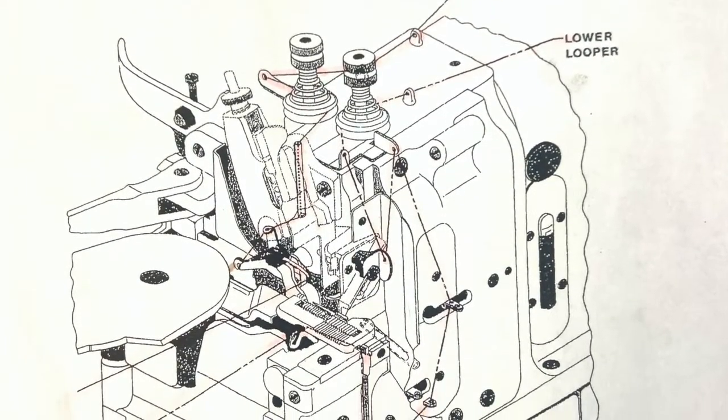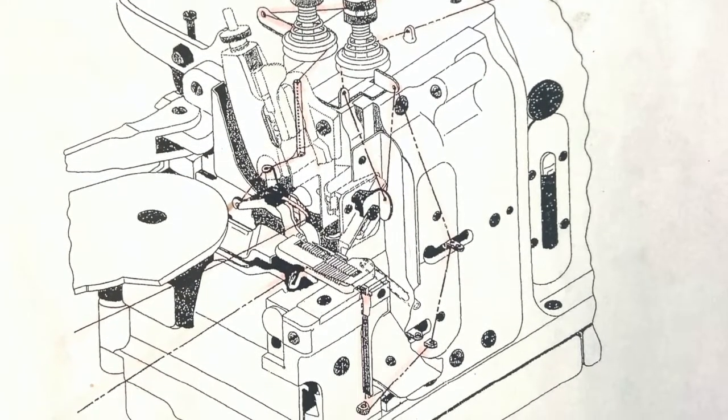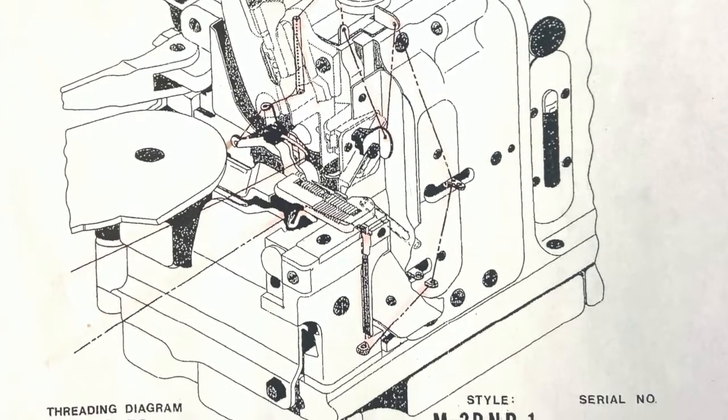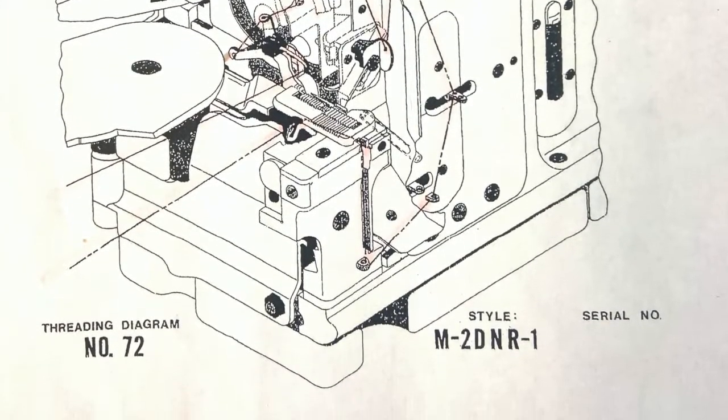The threading instructions are posted on the wall next to this machine if you ever need to review. Always remember to thread the lower looper first, and then complete the threading for the top needle.